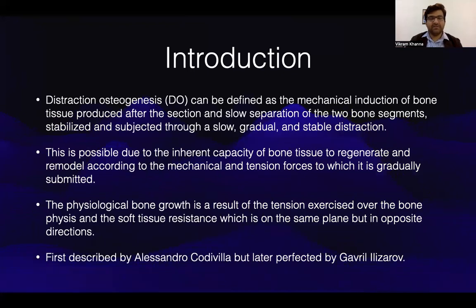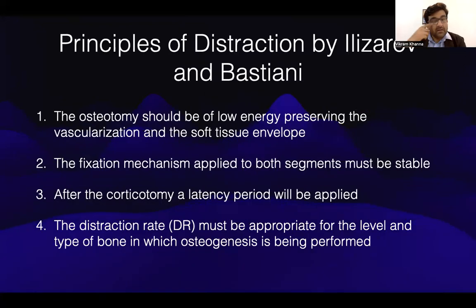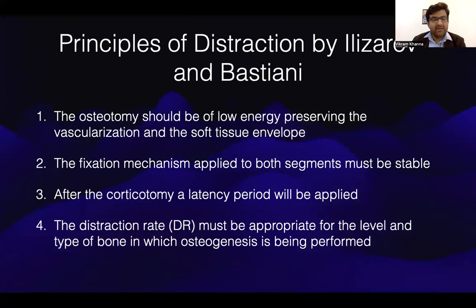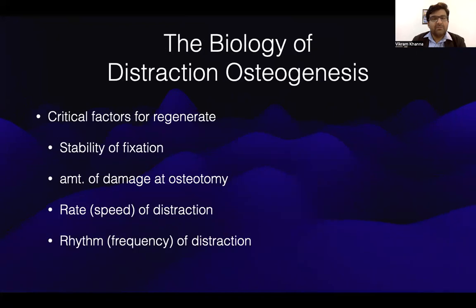First described by Alessandro but later perfected by Ilizarov, the principles of distraction by Ilizarov and Bastian state that the osteotomy should be of low energy, preserving the vascularization and soft tissue envelope. The fixation mechanism applied to both segments must be stable. After the corticotomy, a latency period will be applied. The distraction rate must be appropriate for the level and type of bone in which osteogenesis is performed. The critical factors for regenerate are the stability, the amount of damage at the osteotomy site, rate of distraction, and rhythm of distraction.